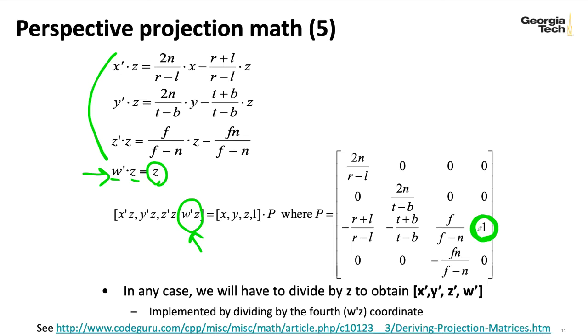So now when I divide everything by this omega prime Z, I'm dividing everything by Z. Doop, doop, doop, doop. And then I'm left with my X prime, my Y prime,